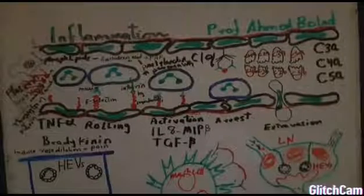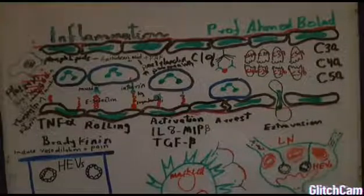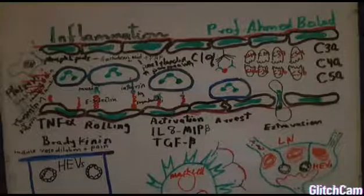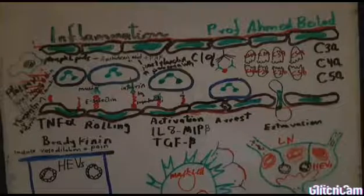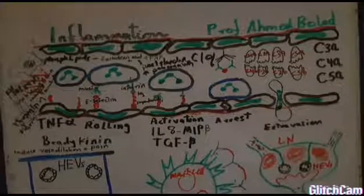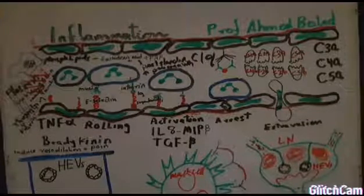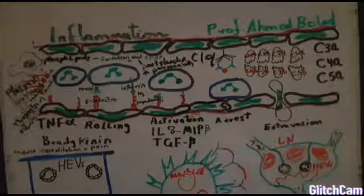In today's lecture I will be talking about inflammation. As you know, the immune system has two arms: innate immune system and adaptive or acquired immune system. The innate immune system is composed of four barriers: anatomic, physiological, phagocytic, and inflammatory barrier.